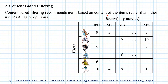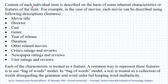How do we use content of the items? The content of each individual item is described on the basis of some inherent characteristics or features of the item. For example, in the case of movies, each movie can be described with the title of the movie, who is the director, who are the cast members, what is the genre, what is the year of release, how long the movie lasts, what are the other related movies, what are the critics' ratings and reviews, what are the newspaper ratings and reviews, and also what are the user ratings and reviews.